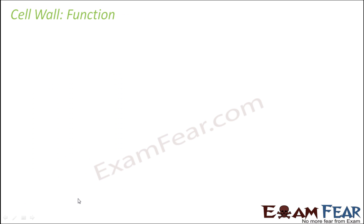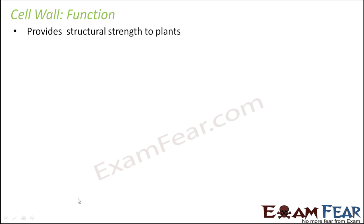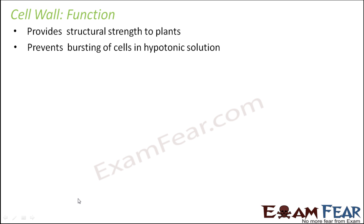Now let us look at the functions of cell wall. We saw the structure of cell wall and the different layers, so now let us see what are the functions and significance of cell wall. They provide structural strength to plants — since they are very rigid, tough, and hard due to the presence of cellulose, they provide a lot of mechanical and structural support to plants.